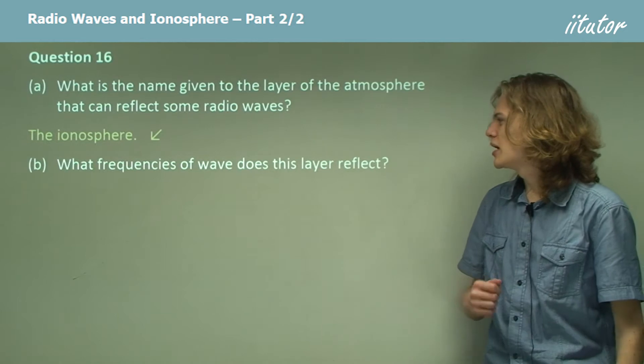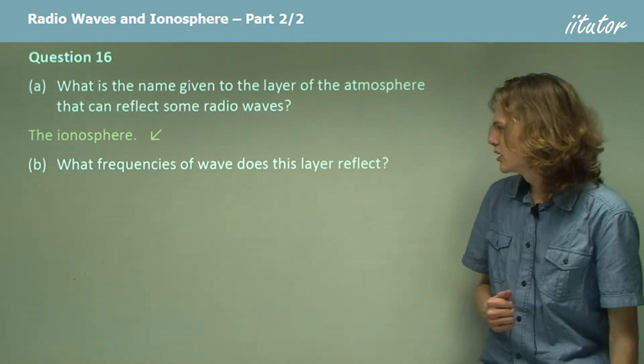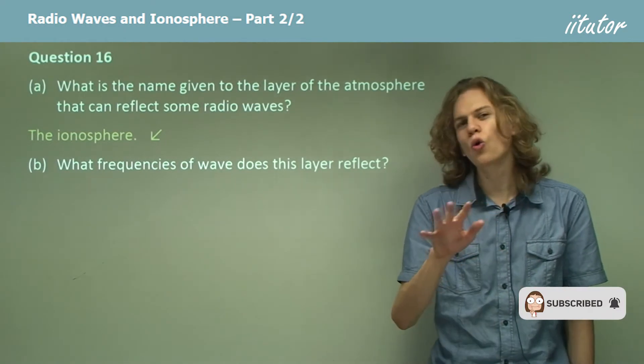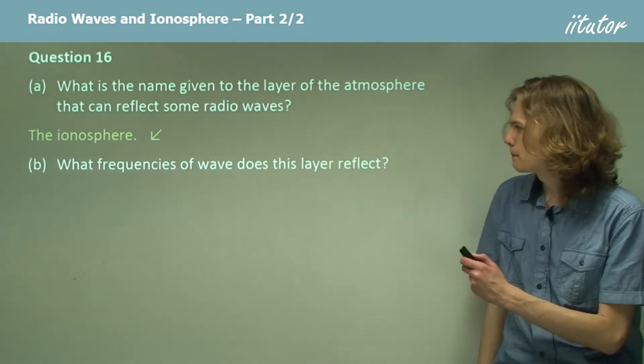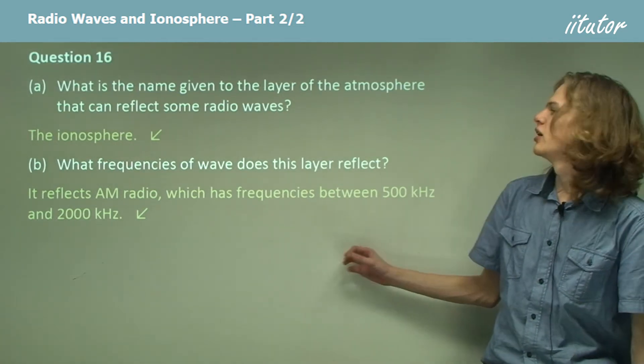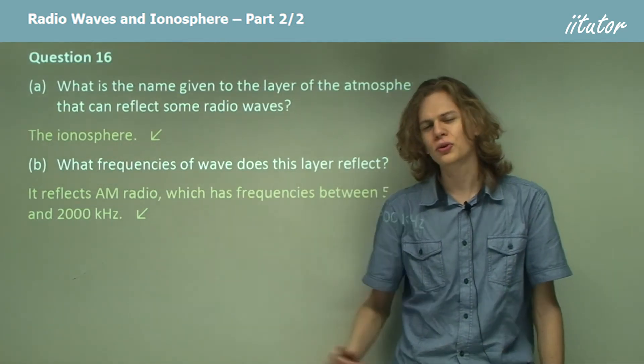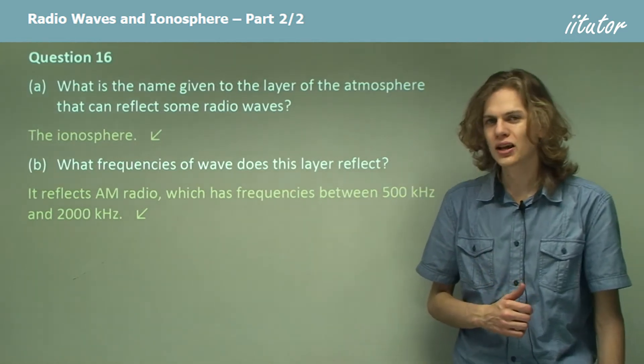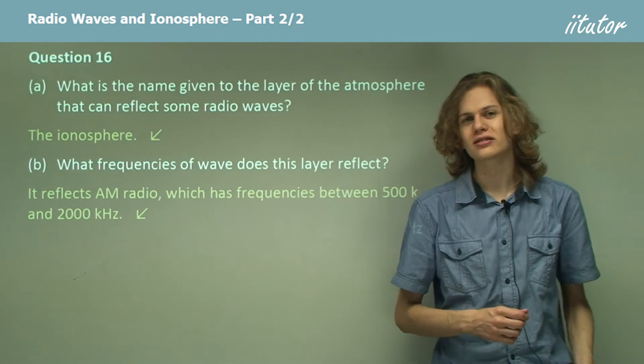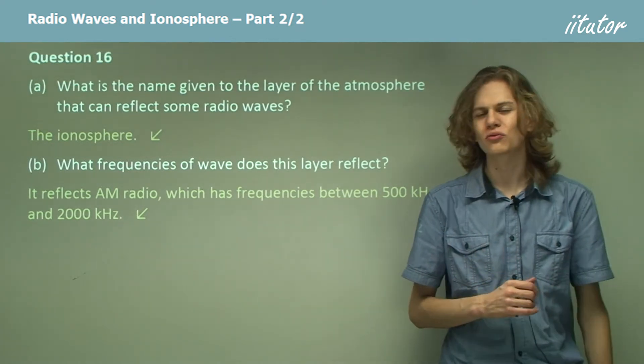What frequencies of wave does this layer reflect? Well, it reflects certain types of radio waves, but not all radio waves. It reflects AM radio, which has frequencies of between 500 kHz and 2000 kHz if we're including shortwave radio. Shortwave radio is also modulated using AM, that is amplitude modulation most of the time.